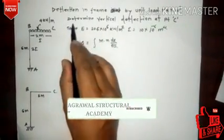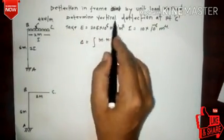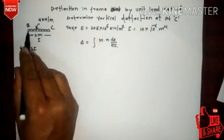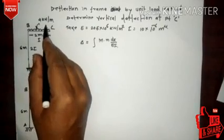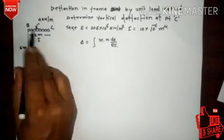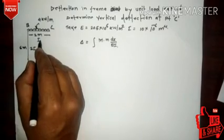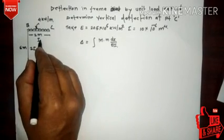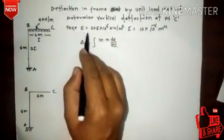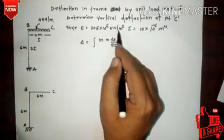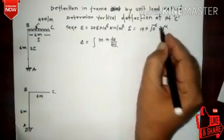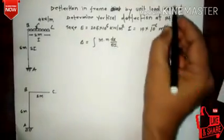We have taken this example: determine the vertical deflection at point C. This is the frame, fixed at A. The vertical column and horizontal beam are subjected to a load of 4 kN per meter. The horizontal beam has a length of 4 meters, the column height is 6 meters. The beam has moment of inertia I, the column has 2I. E is equal to 205 × 10^6 kN/m², and I is equal to 10 × 10⁻⁶ m⁴.